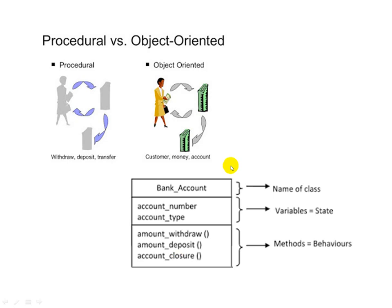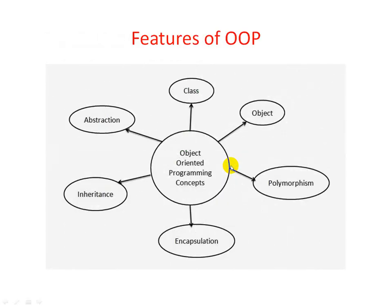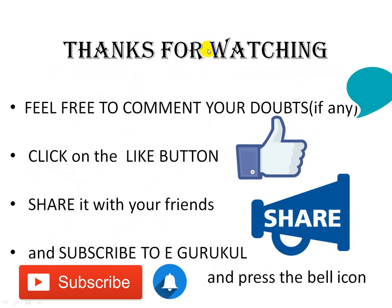In this way object oriented programming works. Now let us see the features: class, object, polymorphism, encapsulation, inheritance, and abstraction. In our next video we will study these features in detail. Thank you for watching. Please ask if you have any doubt, and do share and subscribe to our channel. Thank you.